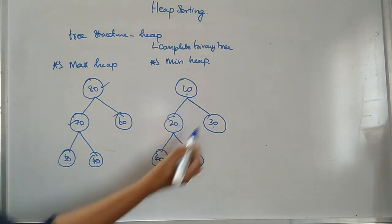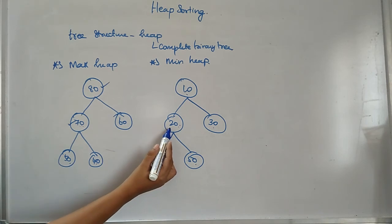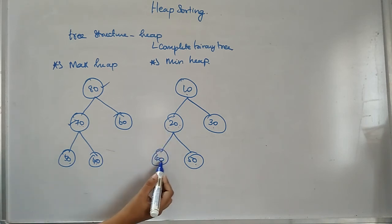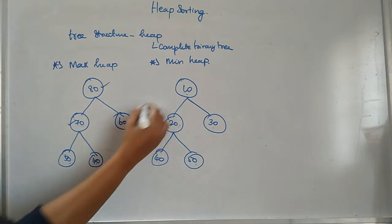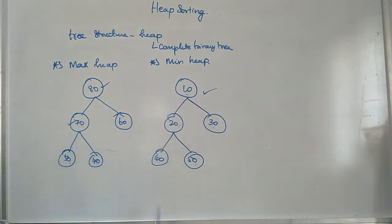For example, 10 is less than 20 and 30. And if you are taking here, 20 is less than 40 and 50. So this tree structure will be called a min heap, and this will be called a max heap.